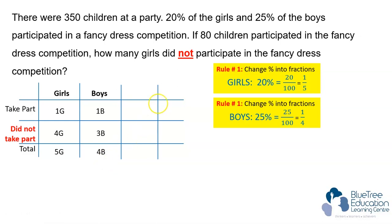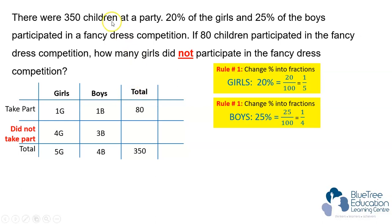When you look at the story, there are two numbers that were not used: 350 and 80. When we put them into the table, we will need to create a new column called total. We'll put 350 here and 80 over here. For this empty box, we take 350 minus 80 to get 270.